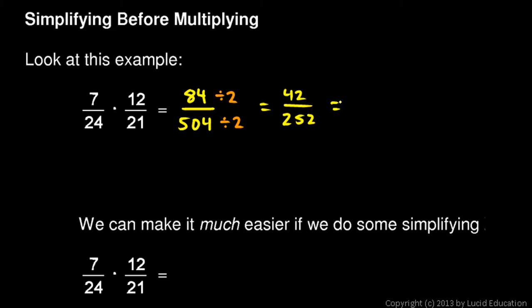And those are still even numbers, so I can divide them by 2 again. 42 divided by 2 is 21, and 252 divided by 2 is 126.